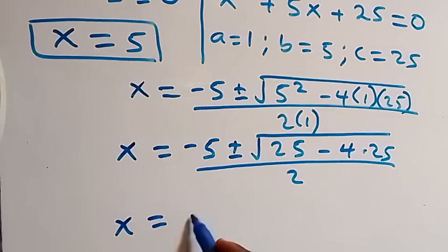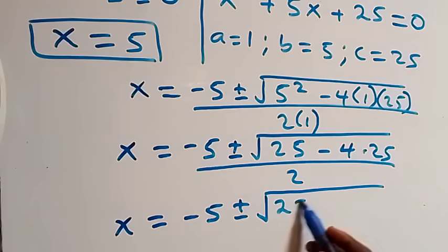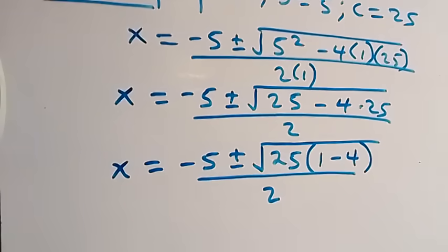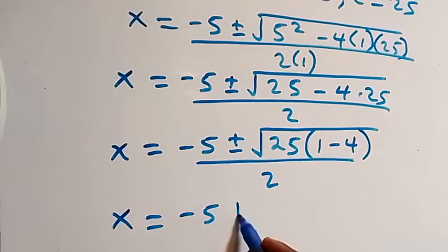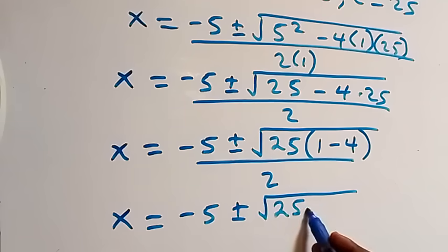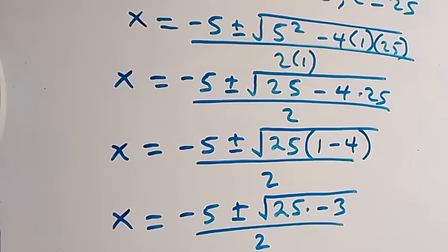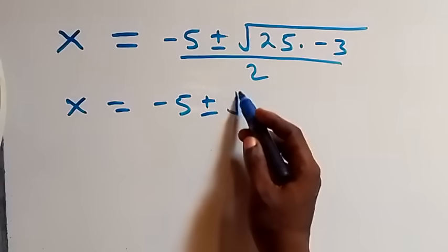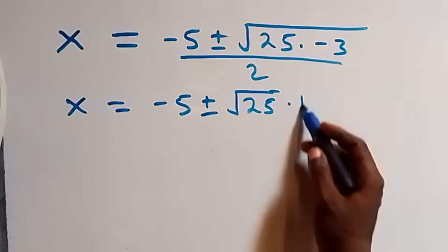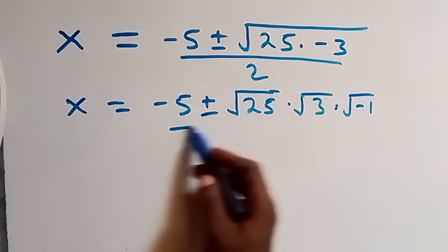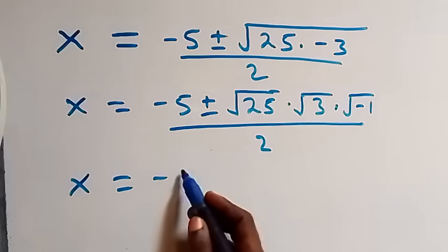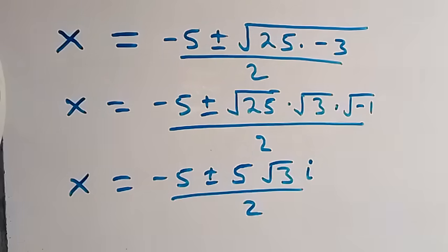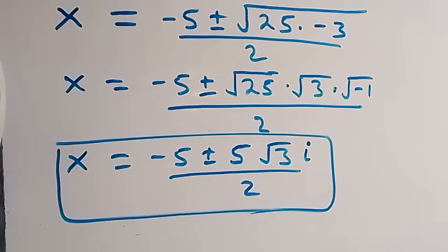Factoring inside the root: x = (−5 ± √(25·(1 − 4))) / 2 = (−5 ± √(25·(−3))) / 2. Separating: √25 = 5, √(−3) = i√3, so x = (−5 ± 5i√3) / 2. These are two more complex solutions from Case 2.